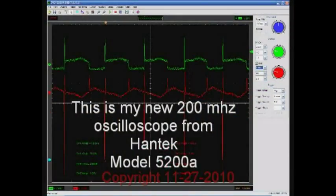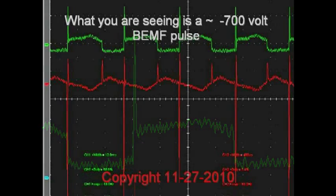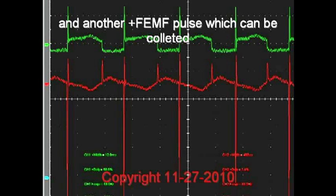Here is my new Hantec scope 5200A. And we're seeing the green is the input pulse, and the red is the back EMF. And this is the famous H pulse. And so we put in one pulse, and what do we get? We get one back EMF pulse.